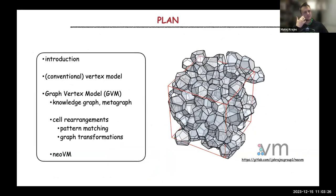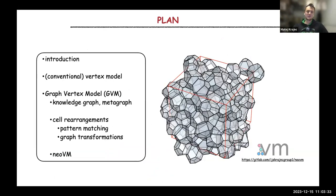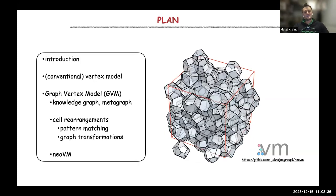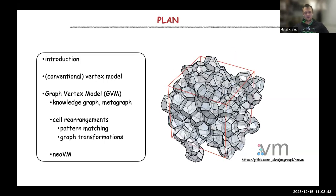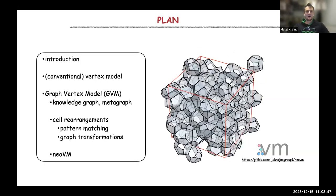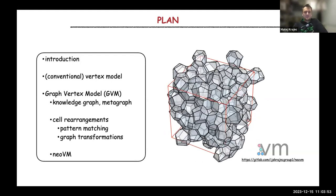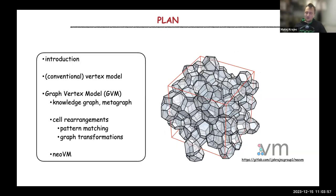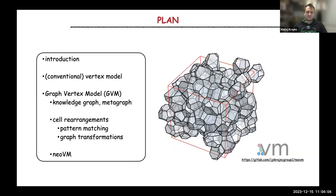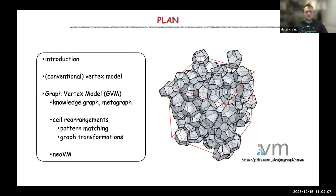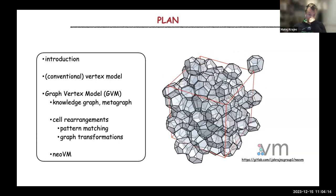The plan is as follows. I will do a bit of introduction first to epithelial tissues and especially into vertex models — the conventional vertex model. Then I will use this introduction as a motivation to start rethinking the way vertex models are formulated. I will present the graph vertex model, which is our new formulation, based on two concepts from data science: knowledge graph and metagraph. Then I will talk about cell rearrangements, which is the central motivation why we even started rethinking the vertex model.